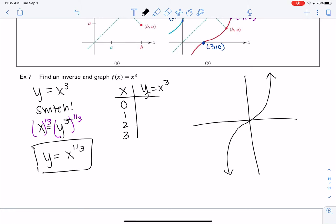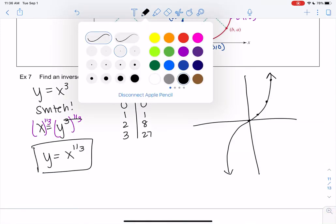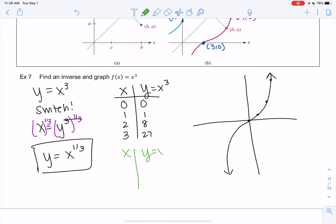This is to help graph if you're struggling with the reflective property. We get 0, 1, 2³ would be 8, and 3³ would be 27. What does this tell me about the inverse? It tells me we have the opposites. If you're not very good at cube roots, we don't need to know anything—we just switch the two columns.